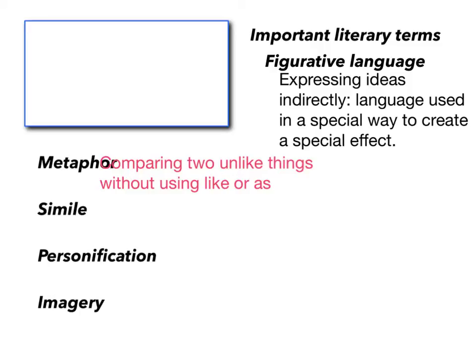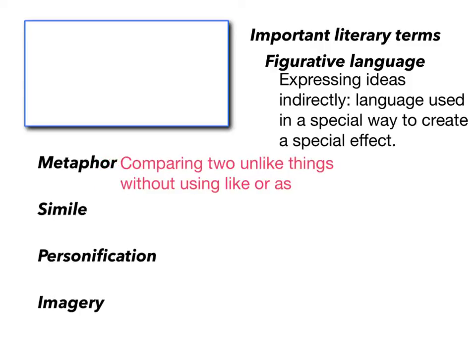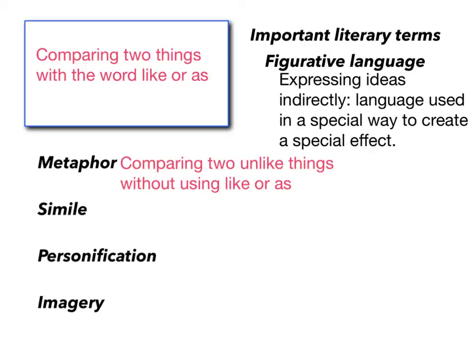The second term we're going to examine is simile — a literary term or phrase that uses the word like or as, comparing two things with like or as.